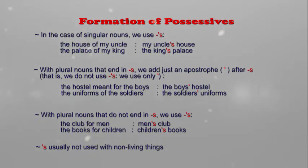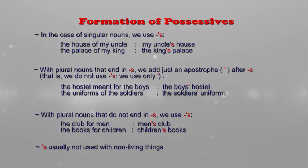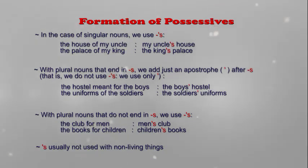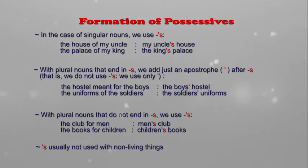Another example: 'the books for children'. In the possessive form, it changes to 'children's books'. Here, 'men' and 'children' are already in the plural but do not end with s, so we need to add apostrophe s.